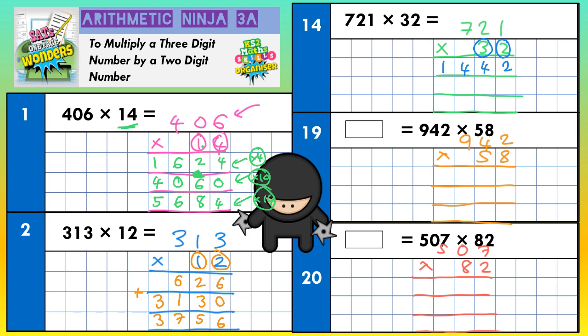Now we've dealt with the 2, it's time to deal with the 3. The 3 stands for 30, so you put your magic zero in and then just times by 3 — that will have the same effect as timesing by 30. 3 ones, 3 twos, 3 sevens in that order: 3 ones are 3, 3 twos are 6, 3 sevens are 21.